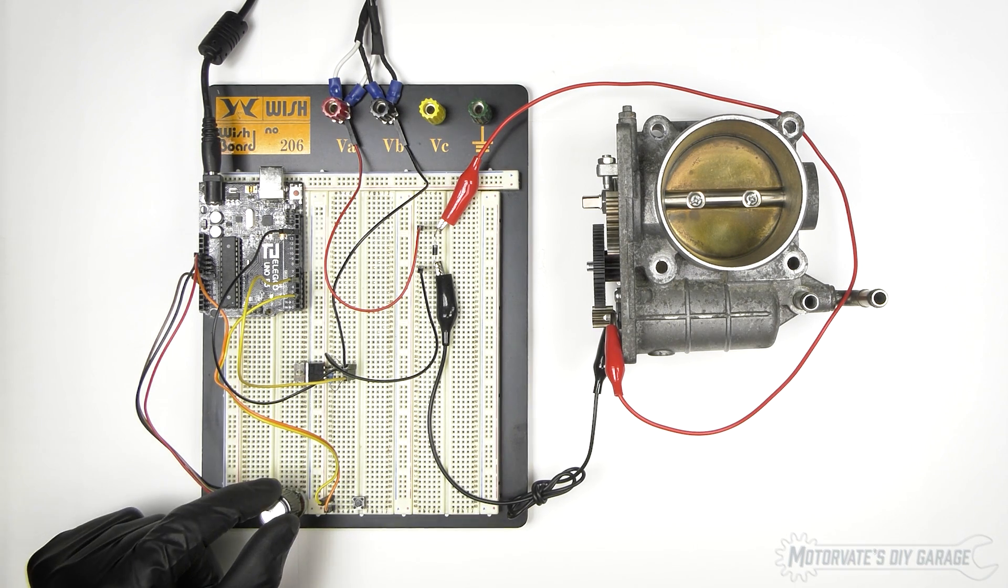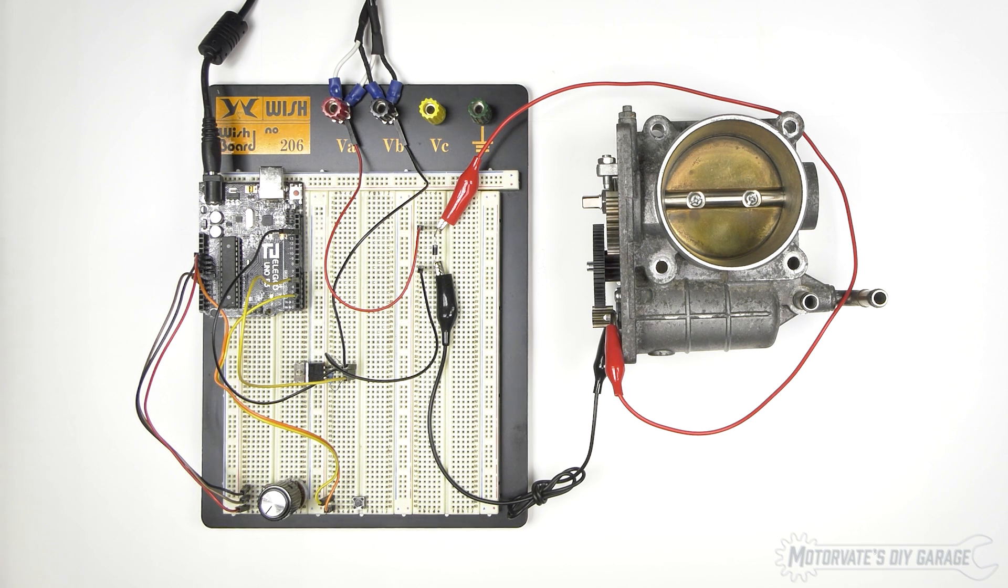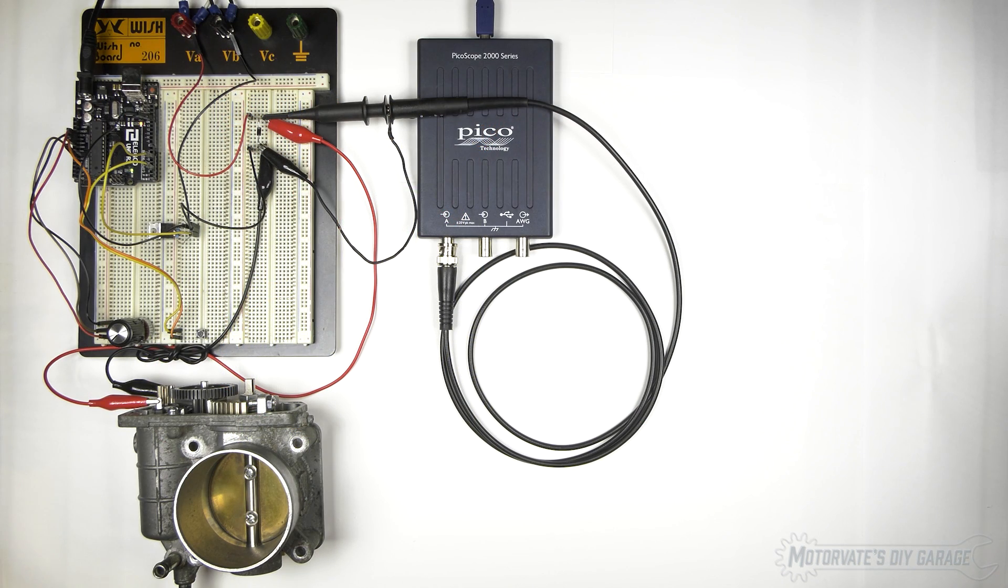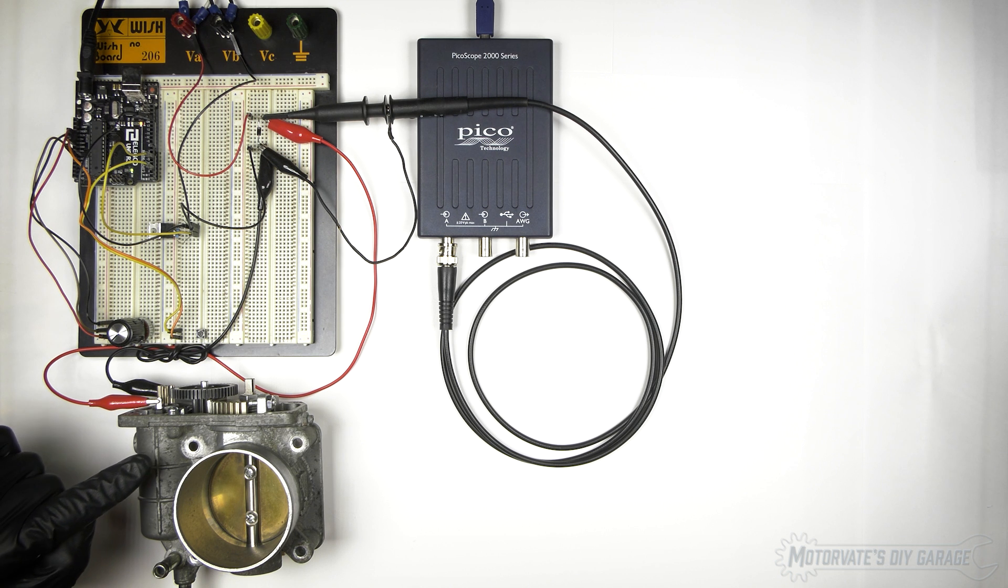Now, you may be wondering, what is that sound? That sound is how the power is being controlled. It's referred to as a pulse-width modulated signal, and the best way to describe it really is not to. Instead, I'm going to show you. We are now going to look at the actual signal that is being sent to the motor in the throttle body.